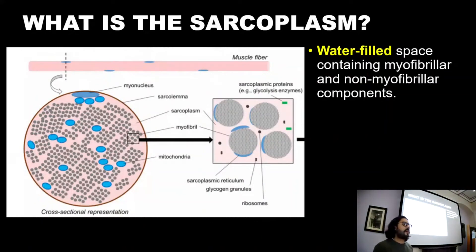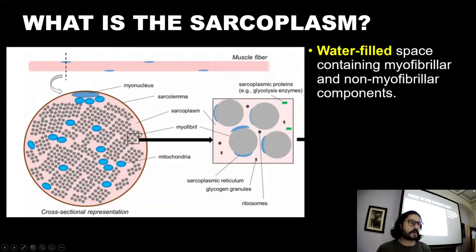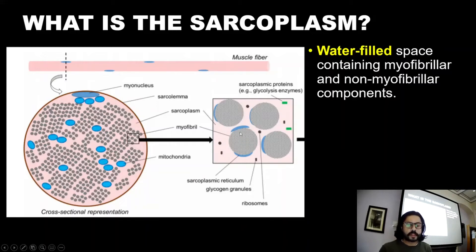Like in the previous presentation, we need to define what myofibrillar hypertrophy is. We also need to define what the sarcoplasm is. The sarcoplasm is the water-filled space that contains the myofibril content — the grey shaded circles we've already talked about. When we look at this magnified, we can see all of the little myofibrils and myofilaments. The pink area here is the water-filled part of the muscle cell, and it contains non-myofibrillar components as well.